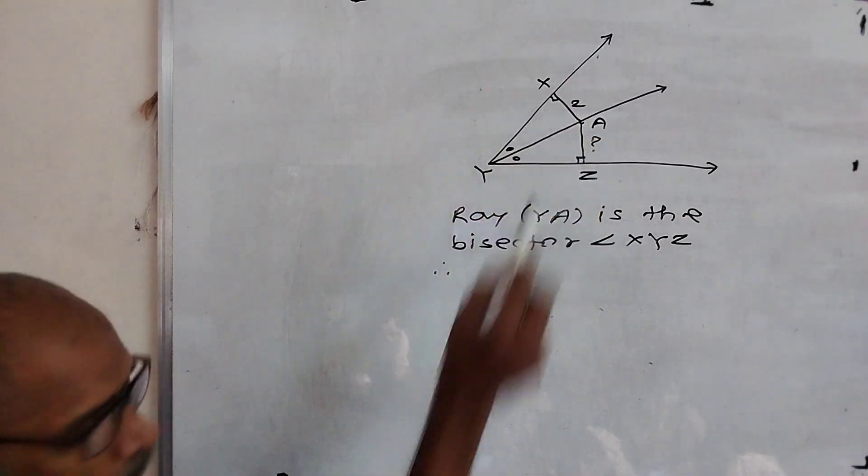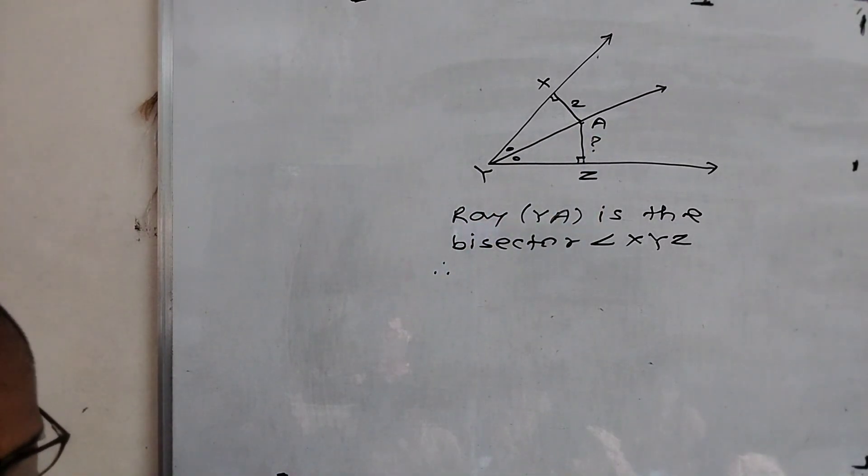See here. Therefore, point A is on the angle bisector of angle XYZ. Did you understand?